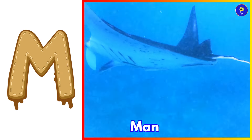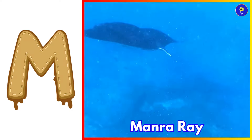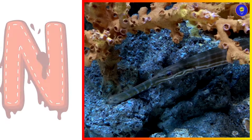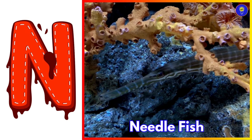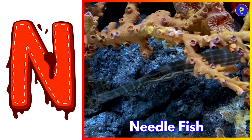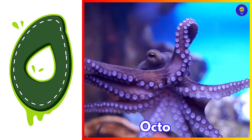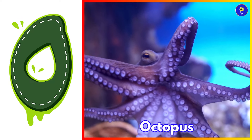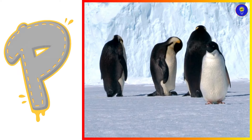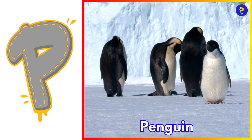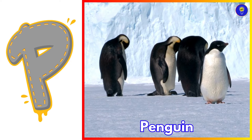M is for manta ray. Muh, manta ray. N is for needlefish. Nuh, needlefish. O is for octopus. O, octopus. P is for penguin. Puh, penguin.